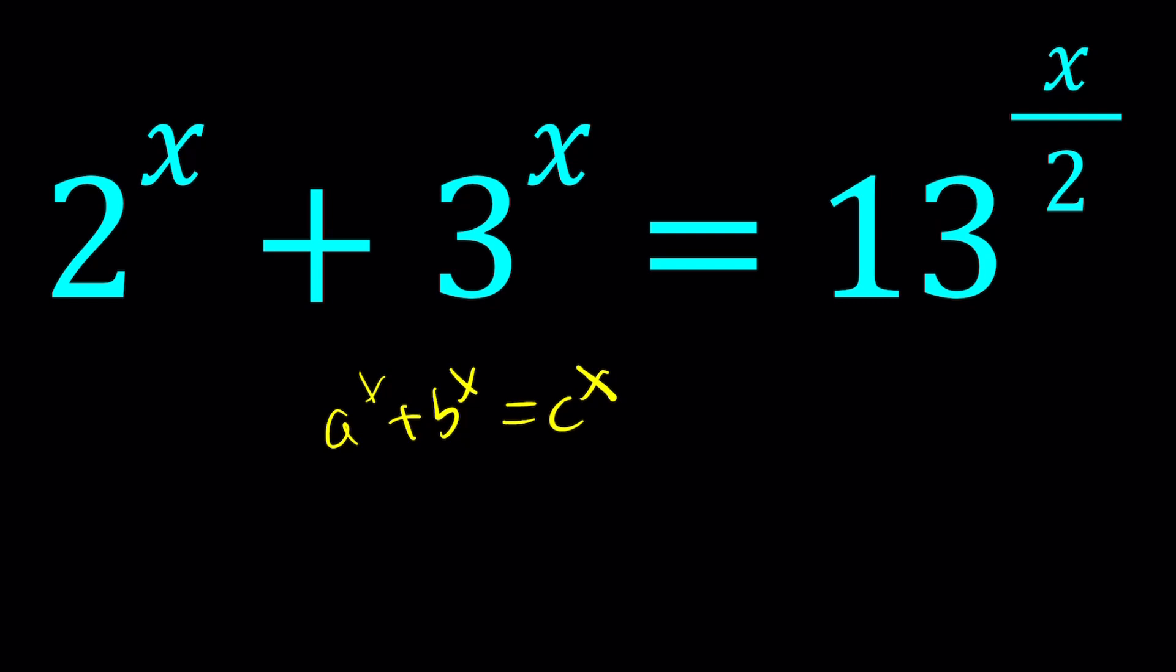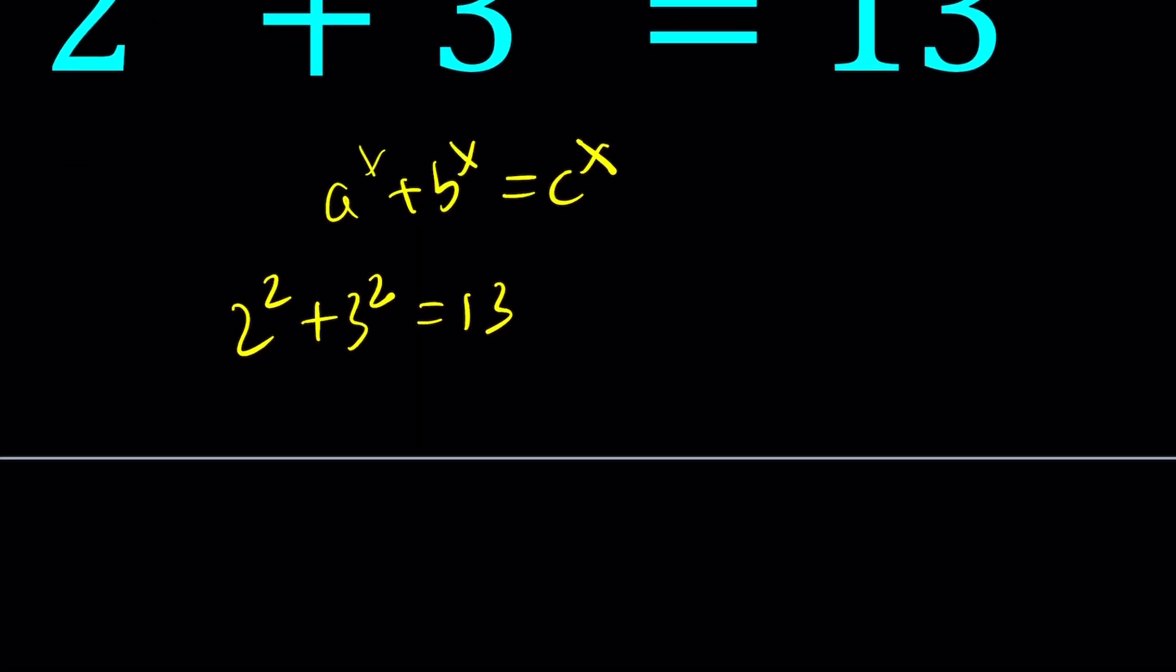2, 3, and 13 are related in a special way. If you square the 2 and square the 3, you get 13: 4 plus 9. From the Pythagorean theorem, we can say this can be written as square root of 13 squared. This gives us a right triangle with side lengths 2, 3, and square root of 13 being the hypotenuse.